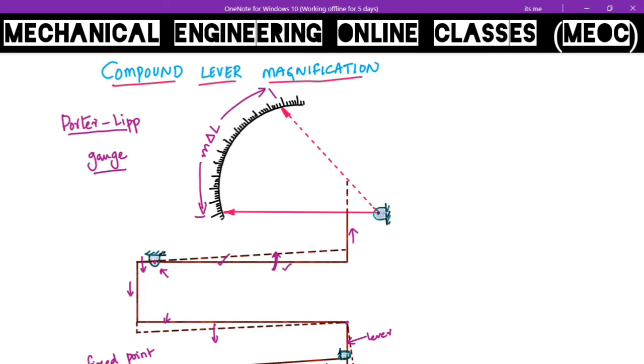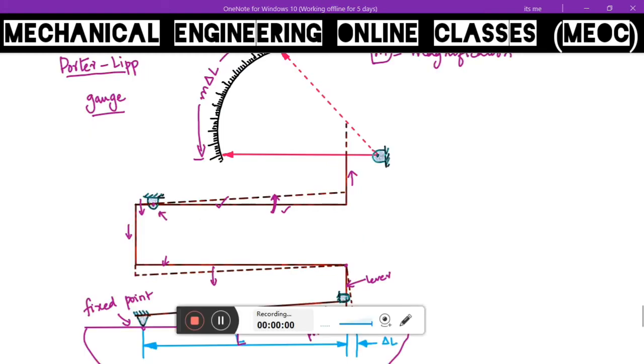This M is the magnification. Delta L is magnified and shown on the scale. The amount of magnification is M times. This is the working principle of Porter-Lipp gauge.